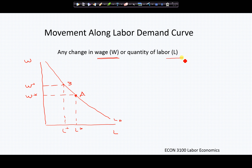A change in the other variable — say from L star to L prime — would similarly move us to a different wage, to W prime, and a different point on the labor demand curve. So as wage or labor, which are simply the two variables defining this relationship, change, it's a movement along the existing curve.